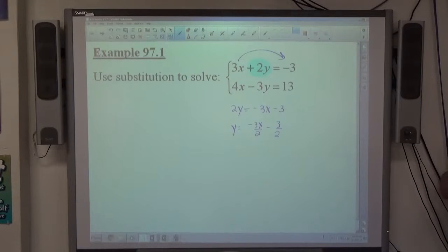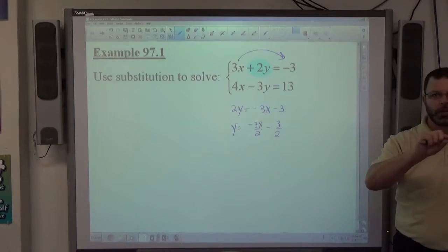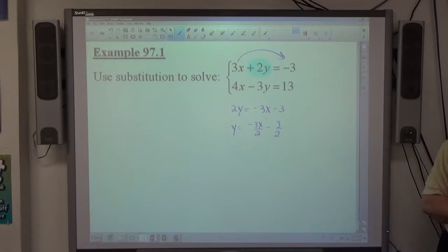I do recommend getting individual pieces like that instead of just negative 3x minus 3 all over 2, separated into individual pieces. I think you'll find that to be easier.